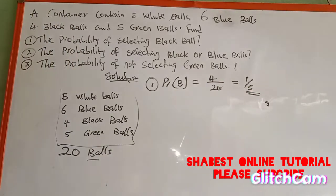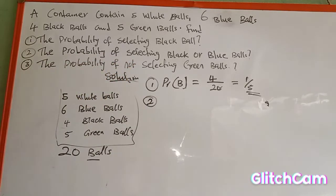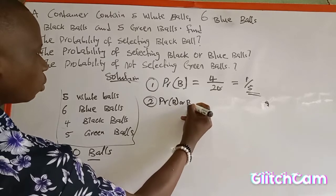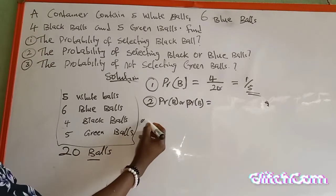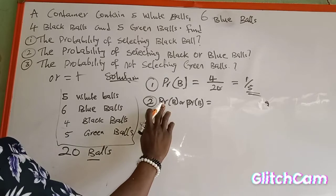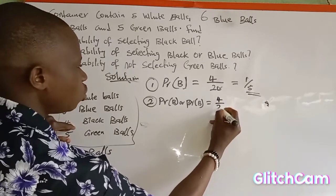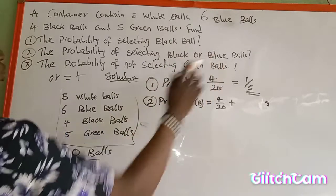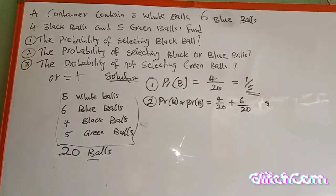For number two, we are asked to find the probability of selecting black or blue balls. In probability, 'or' means addition. So we have the probability of selecting black — which is four over twenty — plus the probability of selecting blue. The blue balls in the container number six, so we add six over twenty.